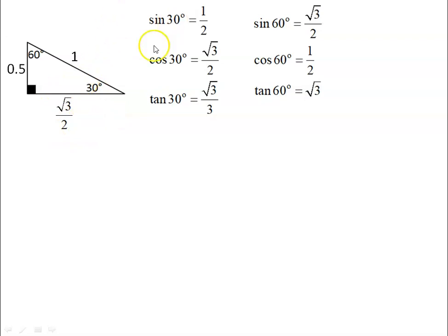And again, I can write out all of the trig ratios. You can pause and verify them if you like to make sure that they make sense. But just taking this one as an example, cos of 30 is the adjacent side divided by the hypotenuse, which is root 3 over 2.